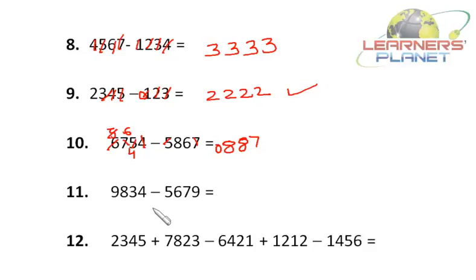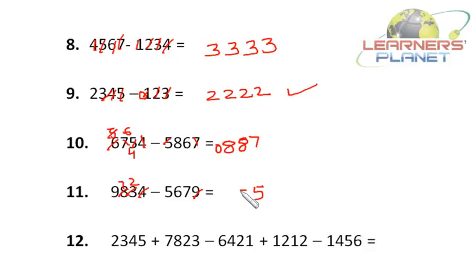Now let's do this subtraction problem. It's 4 minus 9: borrow 1, so 14 minus 9 is 5. Then 2 minus 7: I cannot do it, so borrow 1 — 12 minus 7 is 5. Then 7 minus 6 is 1, and 9 minus 5 is 4. So the answer is 4, 1, 5, 5.